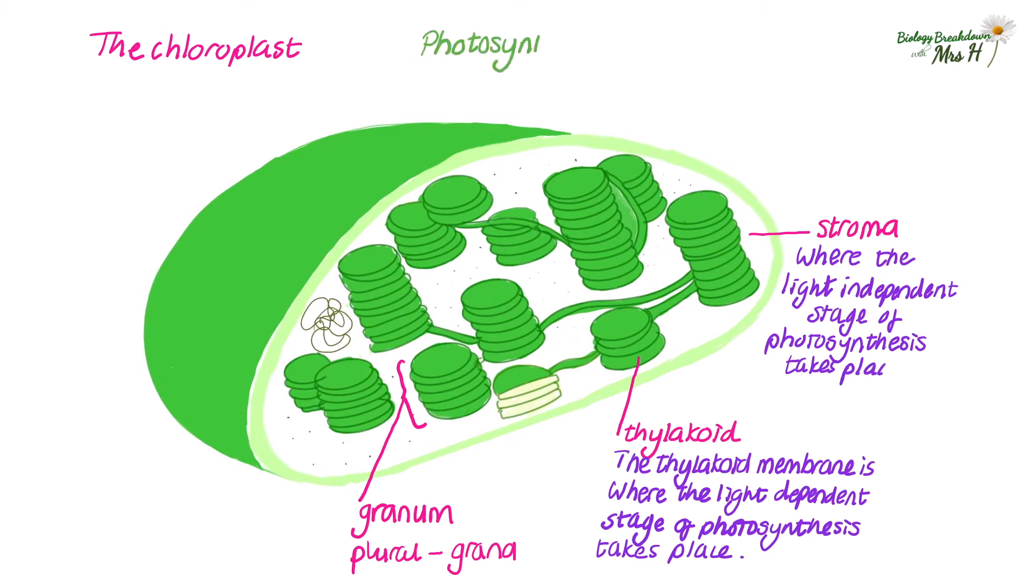So there are two stages of photosynthesis. The first stage is the light dependent stage and the second is the light independent stage and a quick reminder before we move on that chloroplasts do actually have their own DNA and ribosomes.